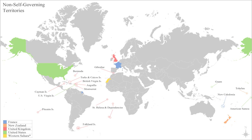Barbados was a colony of Great Britain, important in the Atlantic slave trade, gaining independence in 1966. Brazil was a colony of Portugal since the 16th century, independent since 1822. Canada was colonized first by France as New France, and by England in Newfoundland in 1582, then under British rule before achieving dominion status and losing its colony designation.